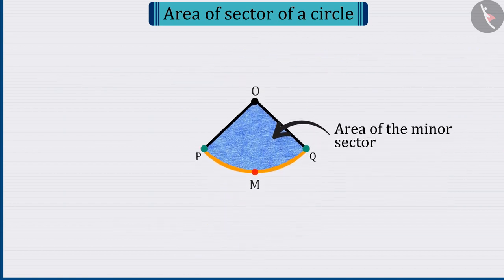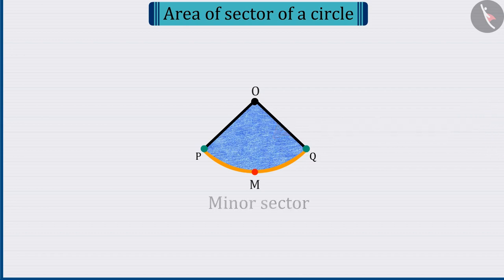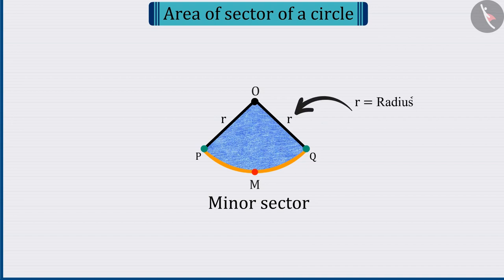So now, can you determine the area of minor sector OPMQ? Come, let's see! Assume in minor sector radius to be R and angle POQ be theta degrees.